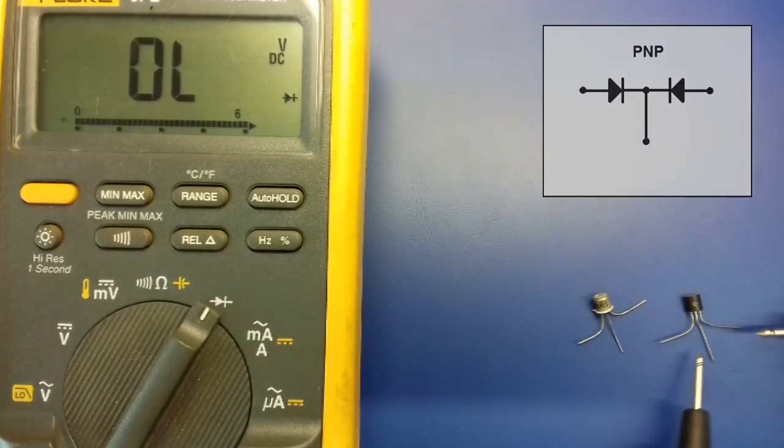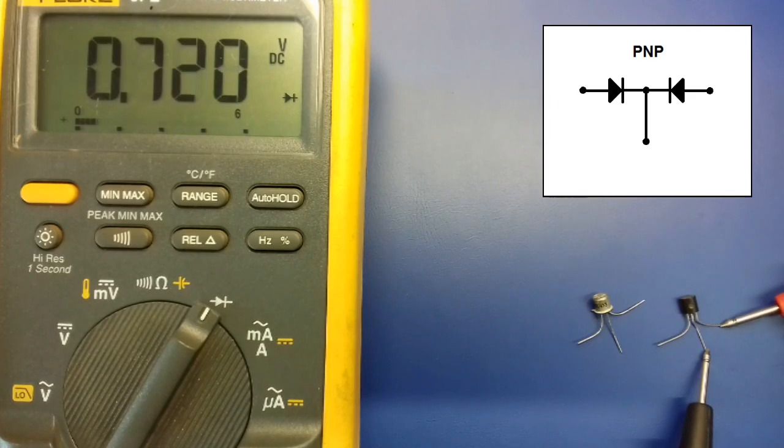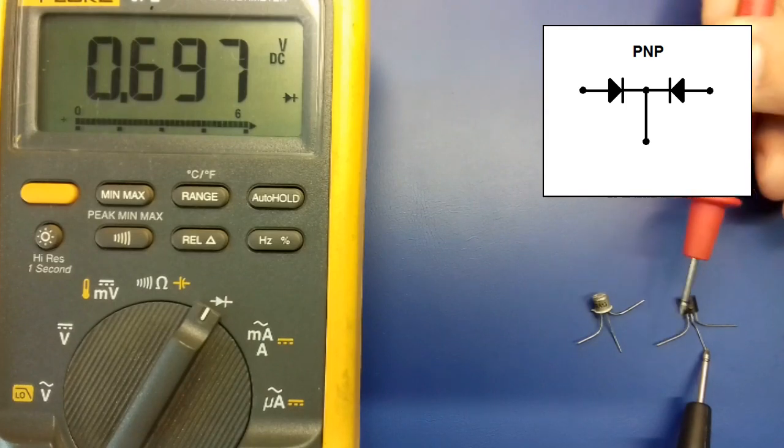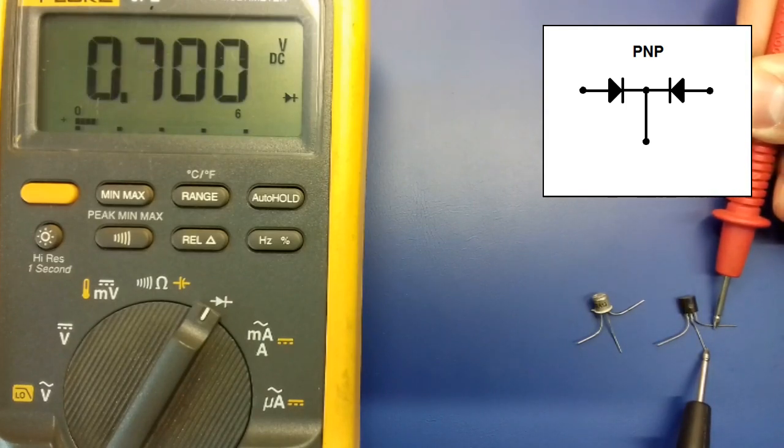For the PNP bipolar transistor you must place the negative test lead on the base. Then, test the inner junctions as you would test diodes.